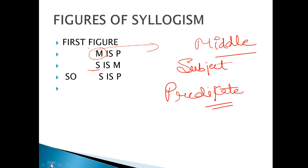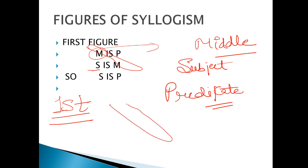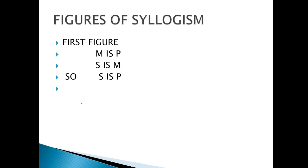So guys, jo hamari first figure kehti hai — first figure mein aisay hona chahiye. Pehli statement mein woh pehle par aana chahiye. Matlab, agar hum yeh lein: all men, all mammals, all mammals are men.